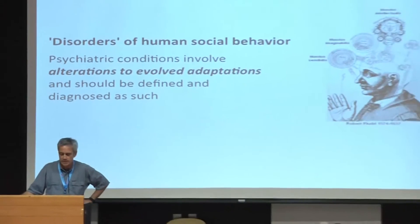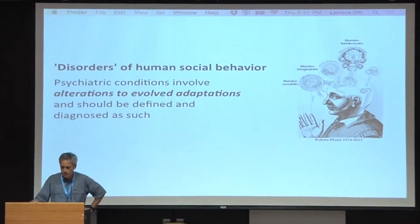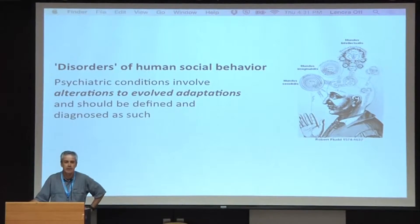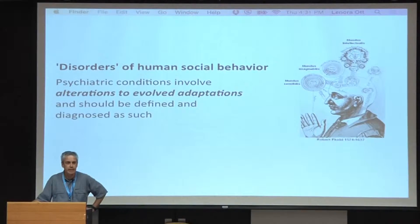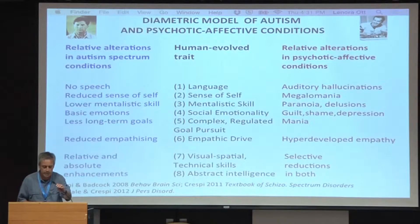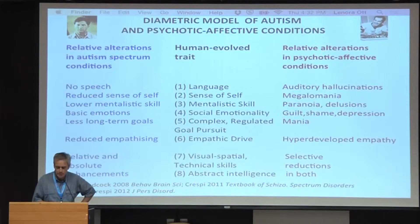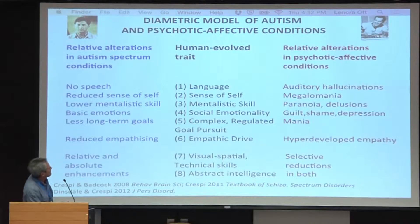I wanted to thank the organizers of the meeting and especially Randy for making all of this happen. Today I'm going to be talking about disorders of human social behavior. One of the main points I want to make is that psychiatric conditions involve alterations to evolved adaptations, and they should be defined and diagnosed in this explicitly evolutionary context. What has evolved in humans is what can and does go wrong in humans. With Christopher Badcock of the London School of Economics, I've developed a model we refer to as the diametric model of autism and psychotic affective conditions, which centers on a set of human evolved or human-elaborated traits.